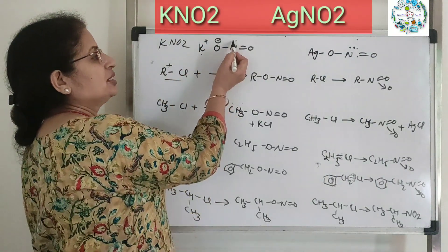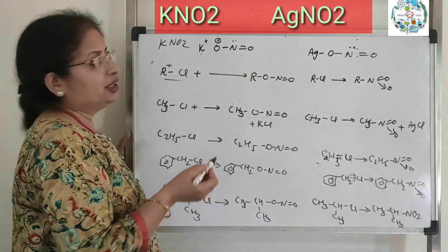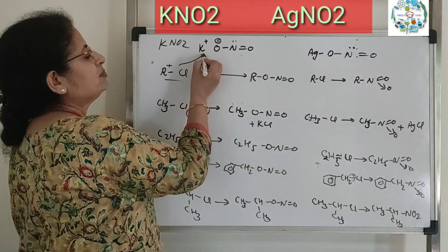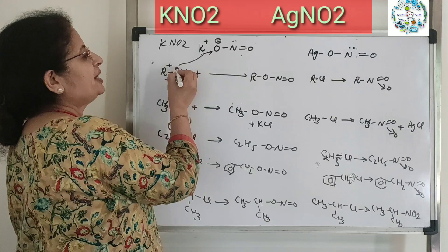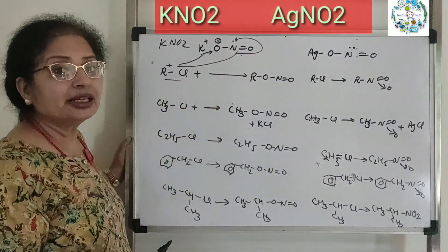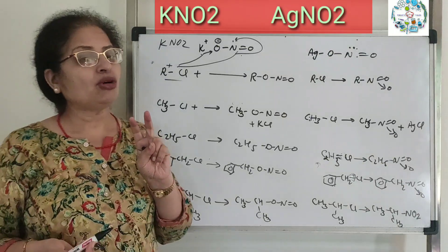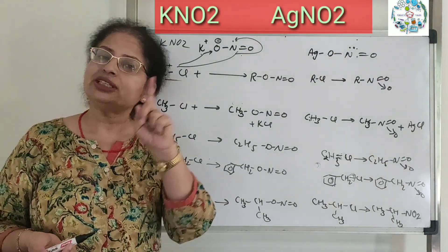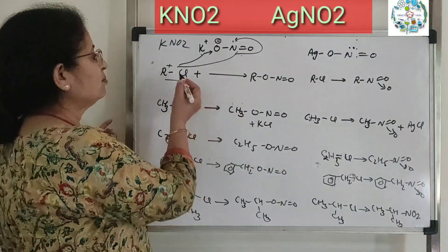But nitrogen also has a lone pair. So R plus has two options - it can attack at oxygen or at nitrogen. It always prefers the negative charge.